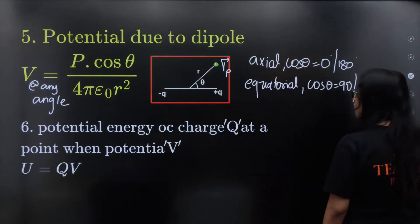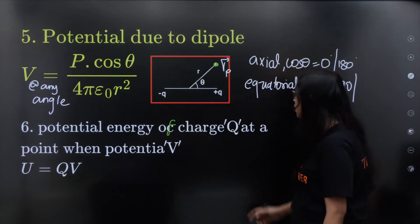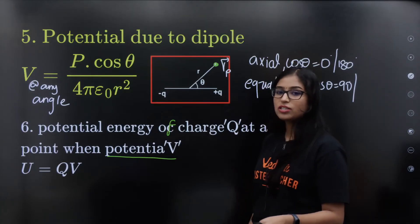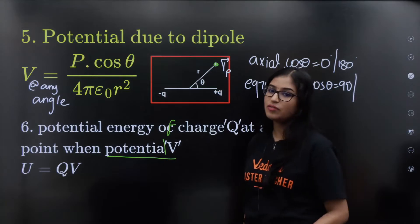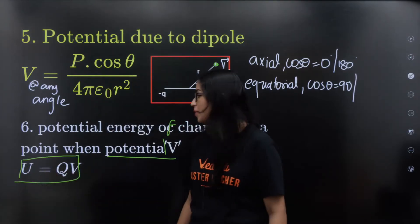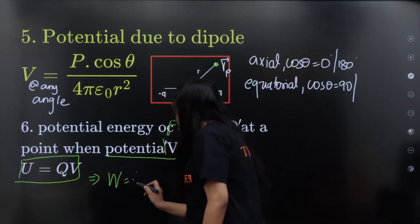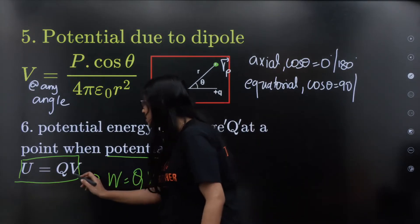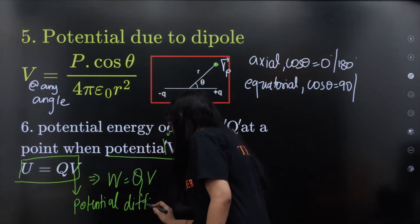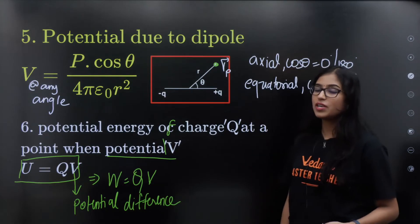Potential energy of a charge q at a point when potential is V: U is equal to q into V. One charge at a point — if the potential at that point is V, the potential energy is U = qV. Potential difference is Va minus Vb.